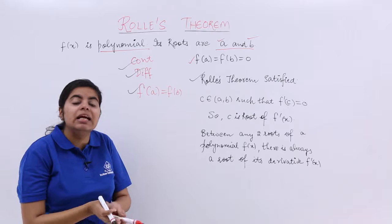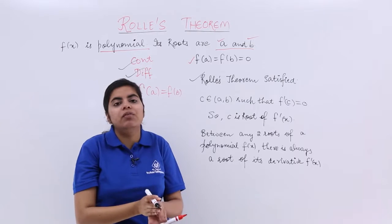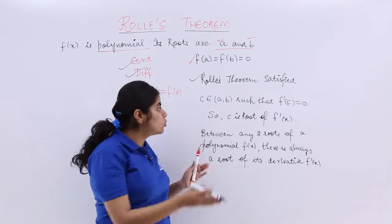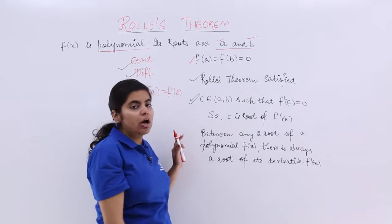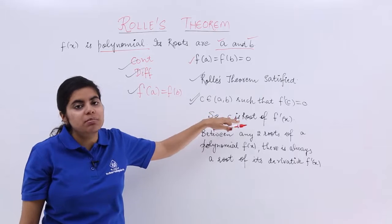Now if Rolle's theorem is satisfied, it says that there exists at least one real number c belonging to (a,b) such that f'(c) equals 0. That is the condition of Rolle's theorem.